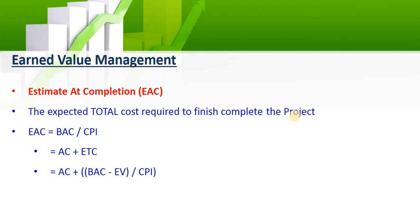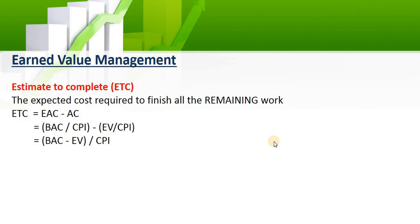Estimate at Complete (EAC) can be calculated in different ways: either as budget at complete divided by the CPI, or as actual cost so far plus the ETC (Estimate to Complete). ETC is the amount of work required to complete the project from your data date to the end of the project. It equals Estimate at Complete minus actual cost, or you can use the other equation shown on screen.